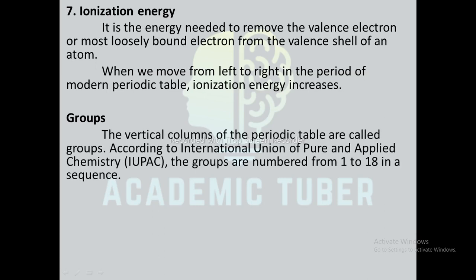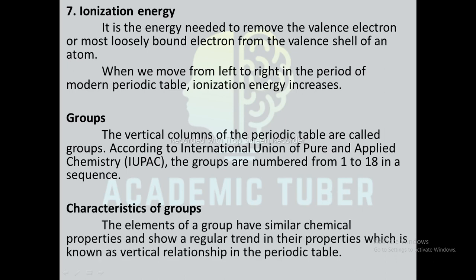Groups: the vertical columns of the periodic table are called groups. According to the International Union of Pure and Applied Chemistry (IUPAC), the groups are numbered from 1 to 18 in sequence. Characteristics of groups: the elements of a group have similar chemical properties and show irregular trends in their properties, which is known as the vertical relationship in the periodic table.